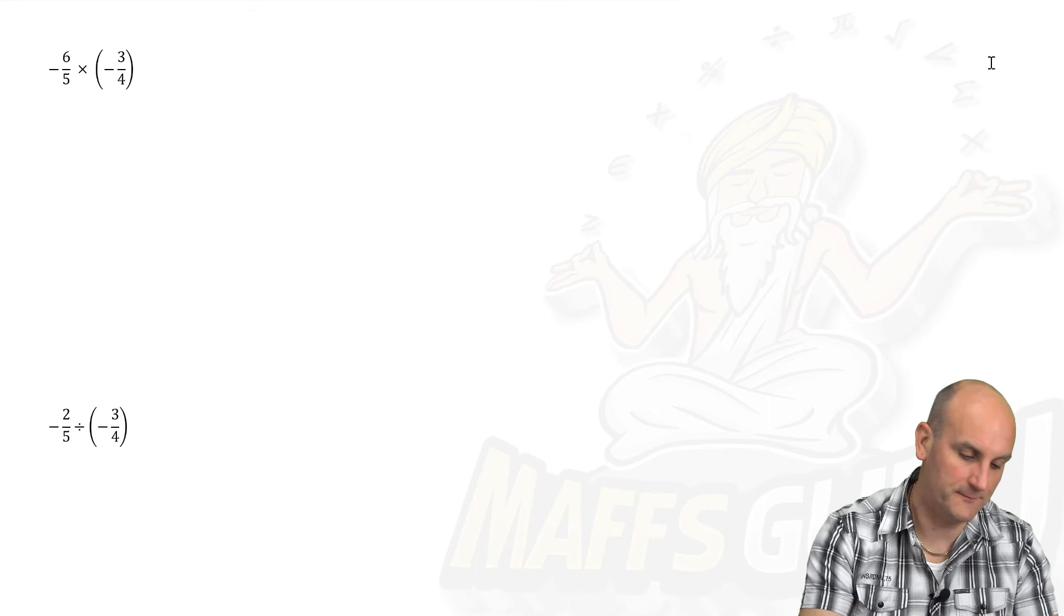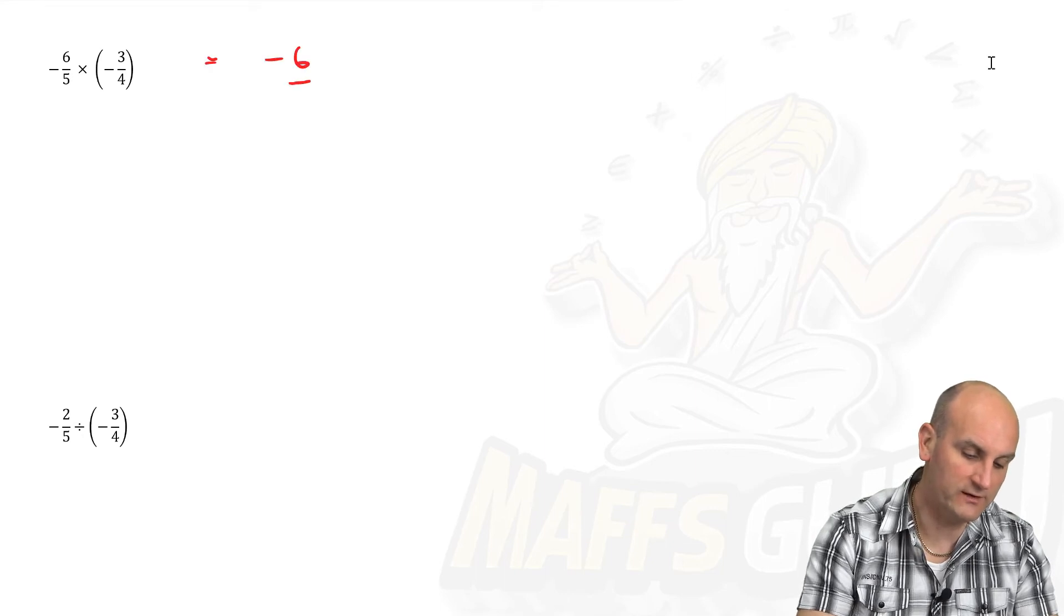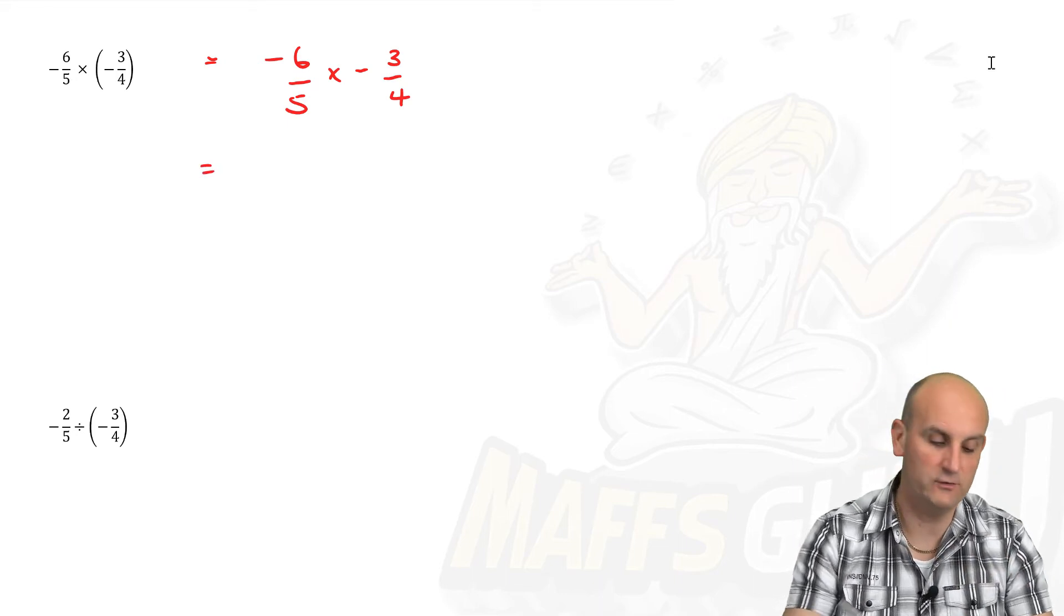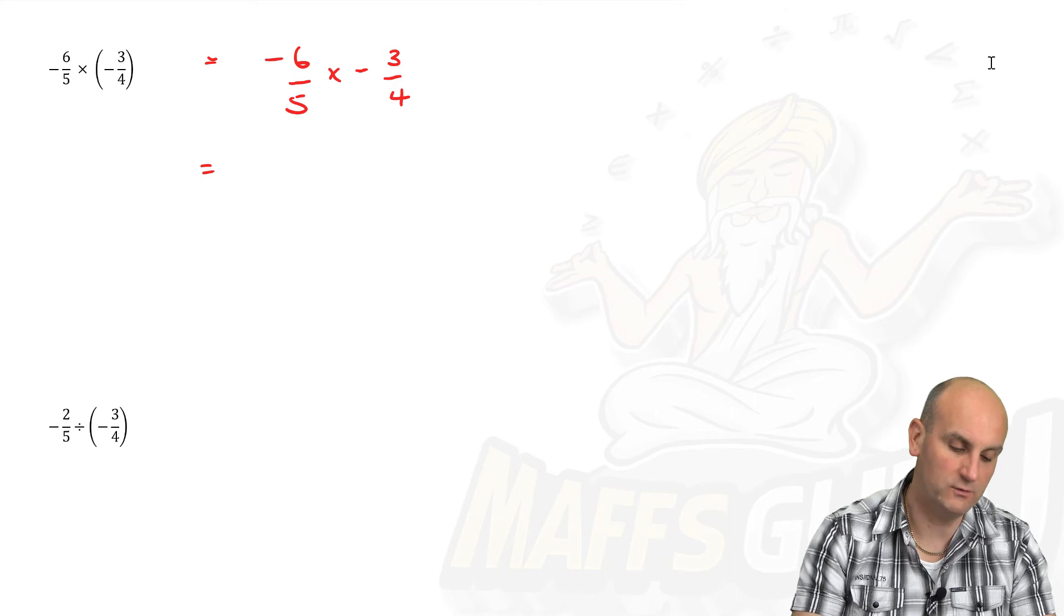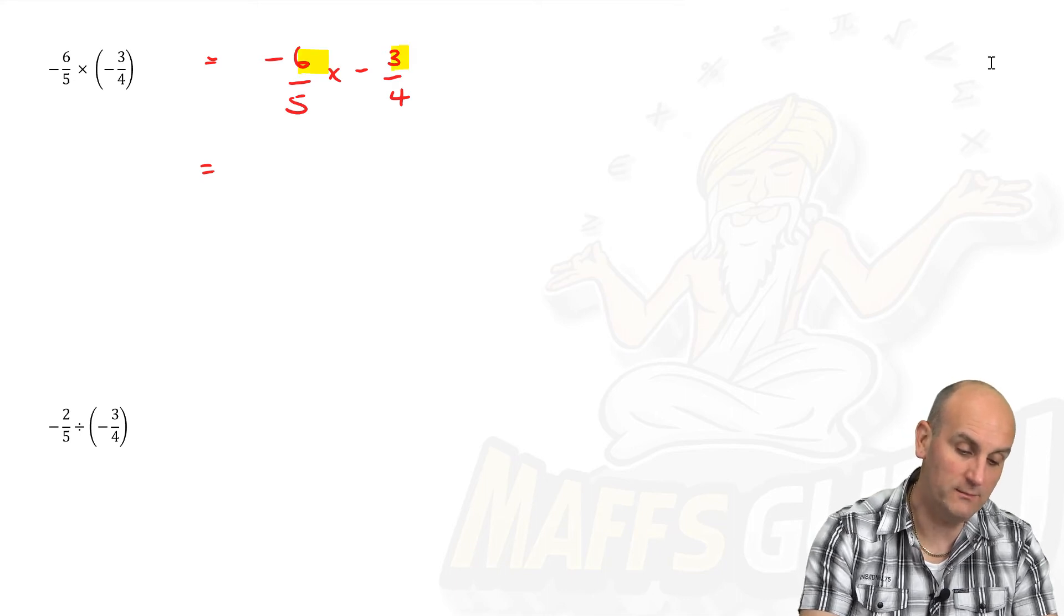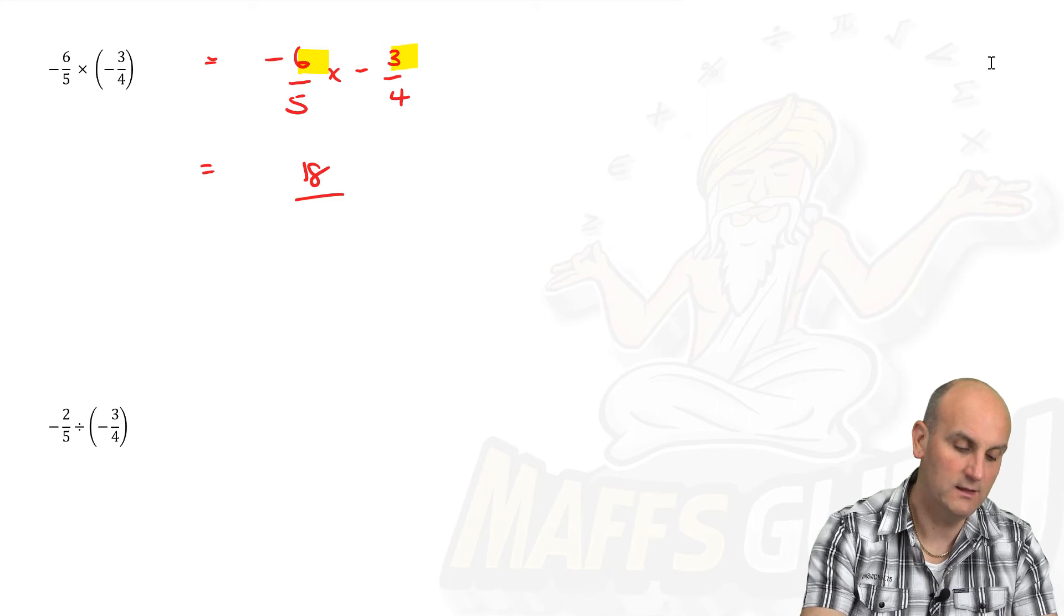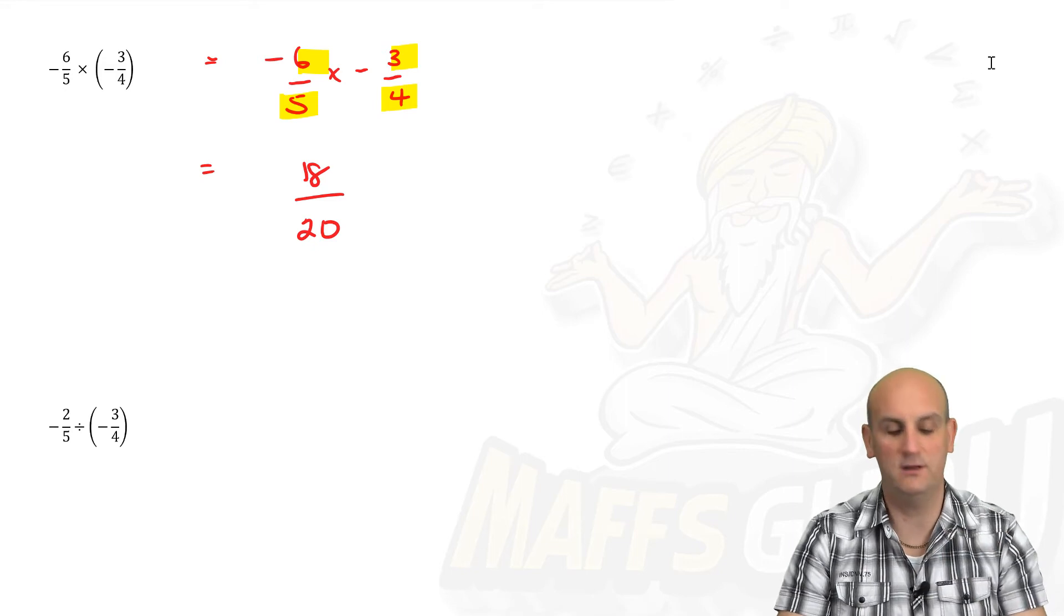Oh, another multiplication sign, but two negatives in this one. So minus six fifths times minus three quarters. All right, I'm going to do the fraction stuff first. So I'm going to do six fifths times three quarters. Don't have to worry about making the bottoms the same. I do six times three, which is 18. I do five times four, which is 20. There we go. So there's my multiplication done.